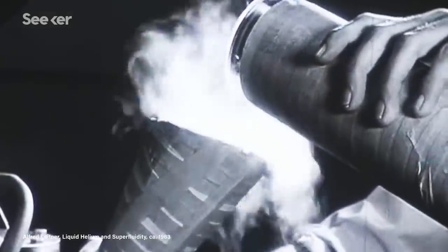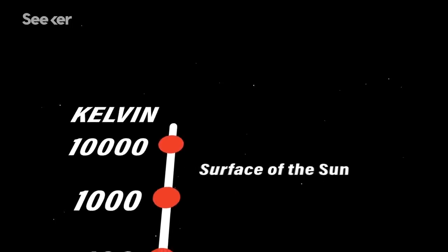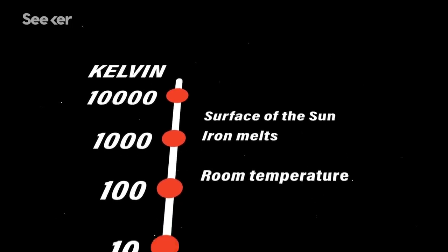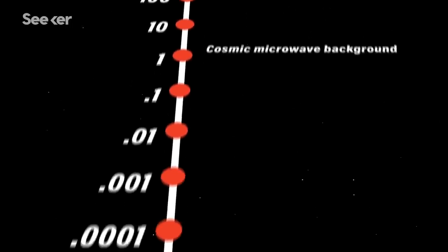The quest for colder temperatures has gone on for over 100 years. Scientists steadily working to get colder and colder temperatures. And by cold, we're talking seriously chilling. Nanokelvin is a billionth of a degree above absolute zero and picokelvin is a trillionth.